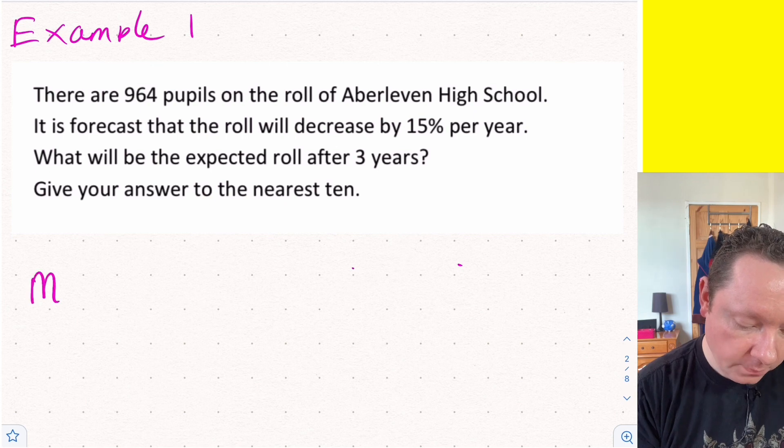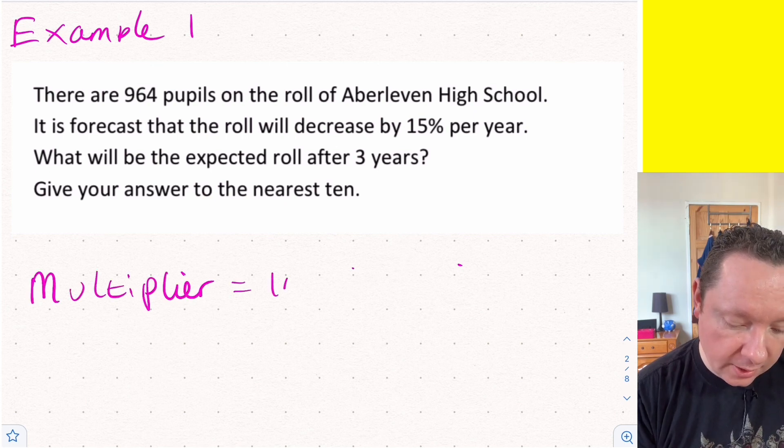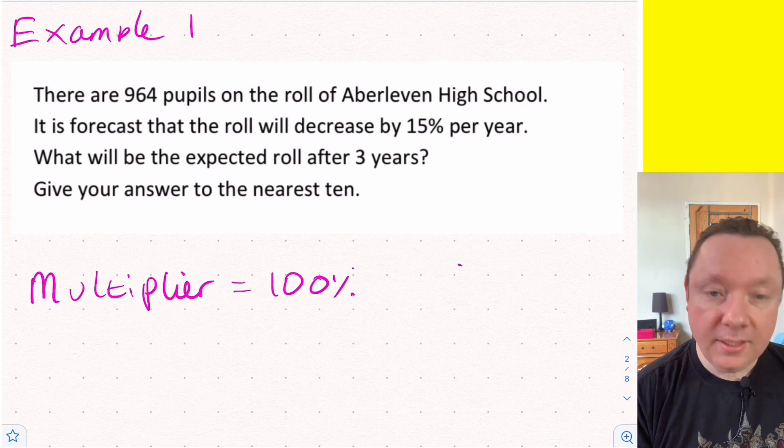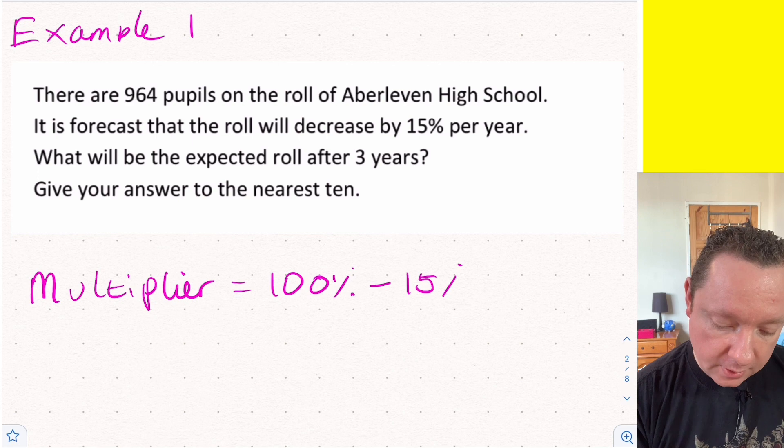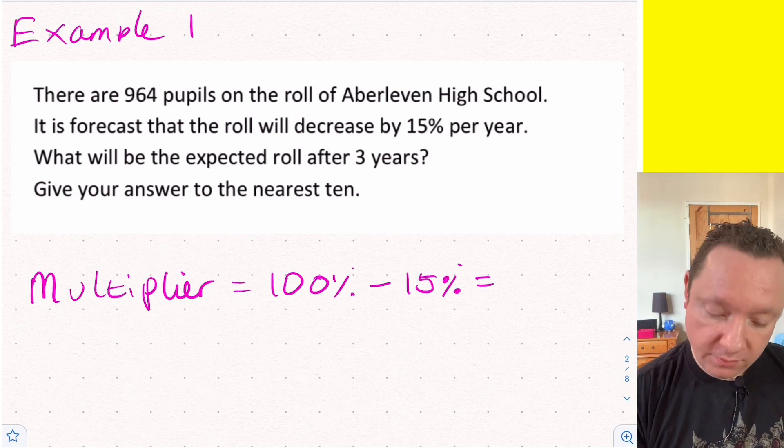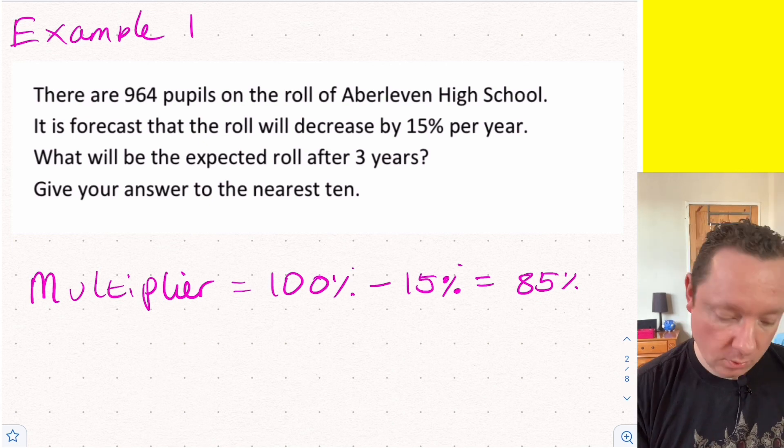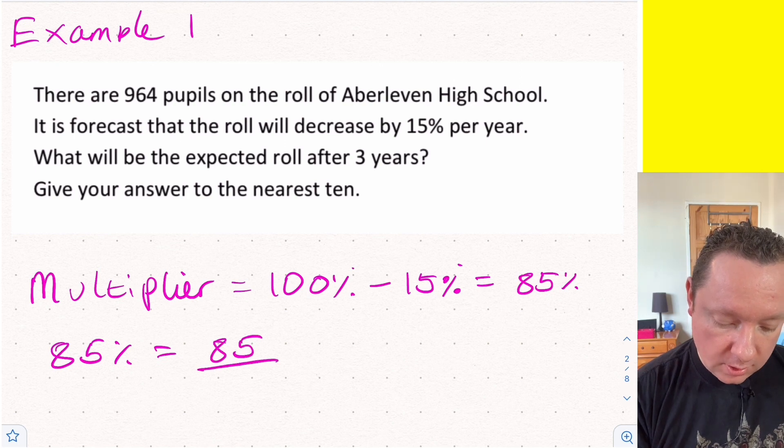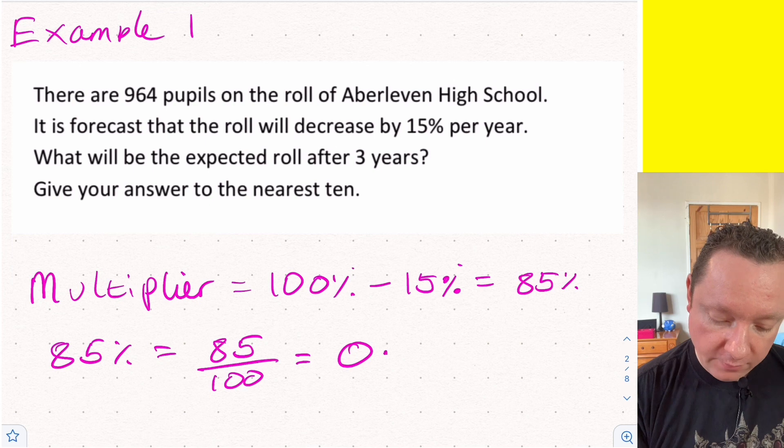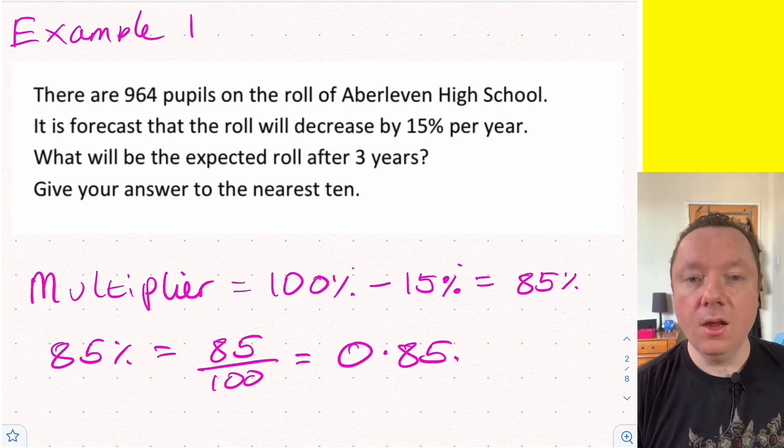The method's always the same. Start off by finding something called a multiplier. A multiplier is very simple - we start off at 100% and it's decreasing by 15%, so I take away 15%. 100 minus 15 is 85%. I will turn that into a decimal, so 85% as a decimal is 85 over 100. Use a calculator if we need to, but 0.85 is what we get.